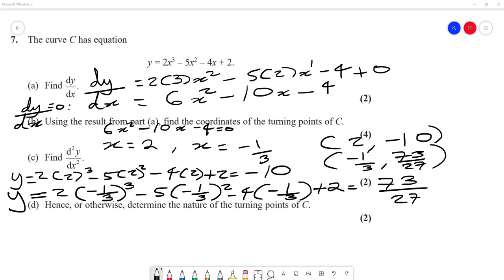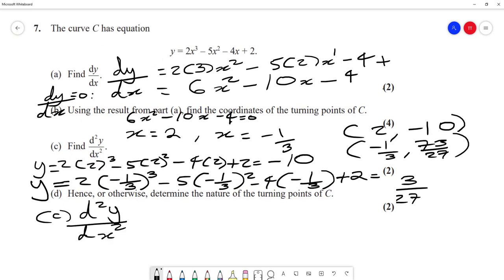Now the next part says find d²y/dx². This is known as the second derivative, so we take the first derivative dy/dx and differentiate it again. So d²y/dx² equals: keep the 6, bring the 2 down, we get 12x. Minus 10x differentiated is simply minus 10. Minus 4 goes to 0. So we get 12x - 10, that's the second derivative.